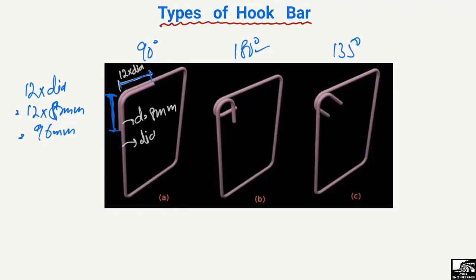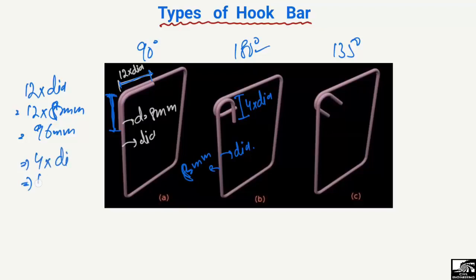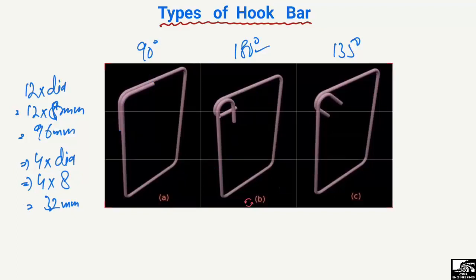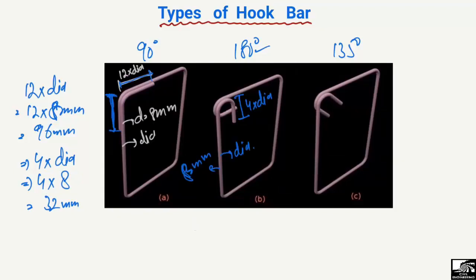In the case of the 180 degree hook, the bending length should be equal to 4 times the diameter (4d). If we again have an 8 mm bar, the bending length is 4 × 8 = 32 mm. This bending length is greatly reduced compared to the 90 degree hook because with a larger bending angle, less bending length is needed.